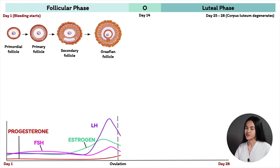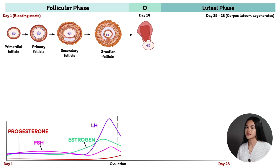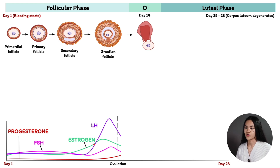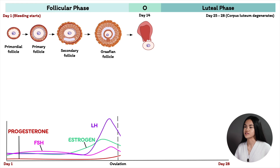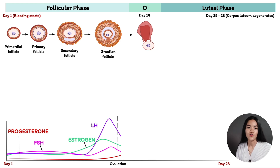Around day 14, ovulation occurs. The granulosa cells synthesize enzymes and prostaglandins that break down the follicular and ovarian membranes, causing rupture and release of the secondary oocyte. Ovulation is triggered by a mid-cycle surge of luteinizing hormone known as the LH surge, occurring around days 12 to 13. This is caused by high levels of estrogen exerting positive feedback on the hypothalamus and anterior pituitary gland, causing the anterior pituitary to secrete more LH and FSH, leading to the LH surge that triggers ovulation.